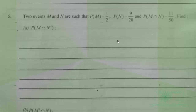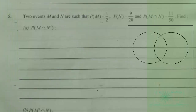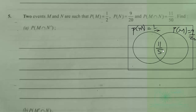We can illustrate with a Venn diagram. Probability of M is 1 over 2, probability of N is 9 over 20, and probability of M intersection N is 11 over 50. We need to find the probability of M intersection N prime.